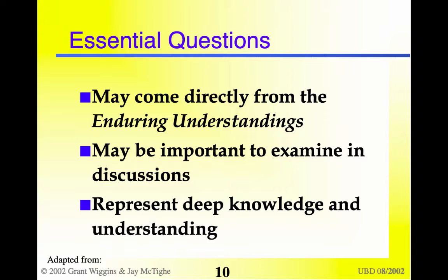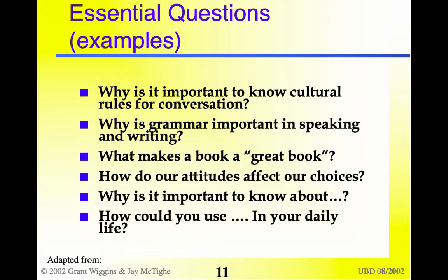Straight from the enduring understandings come the essential questions, and they may be important to discuss. These are things that you want to be embedded throughout your unit, but you won't necessarily test them. These are things that you want students to consider and think about, but there's probably no right or wrong answer. For example, why is it important to know cultural rules for conversation? You're teaching conversation, but something like this is very important — it's not something you'll test, but it's important for them to know, and you may try to discuss it within the unit.